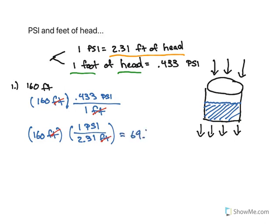Either way, the feet are going to cancel out. If you divide 160 by 2.31, you get 69.3. If you multiply 160 times 0.433, you get 69.3.